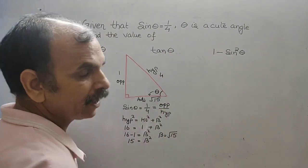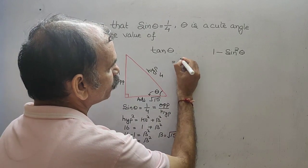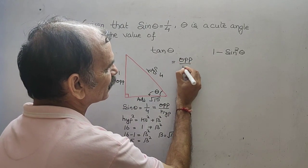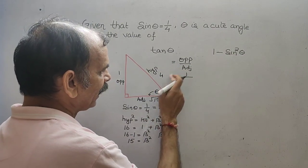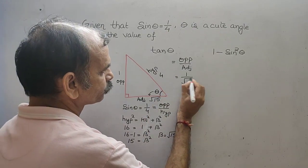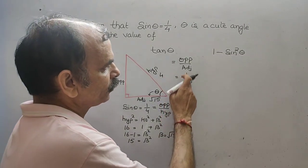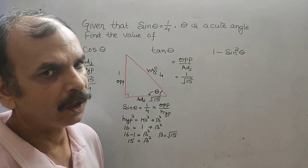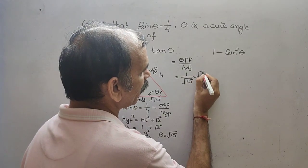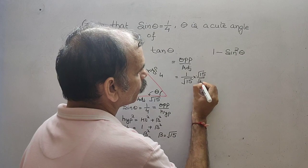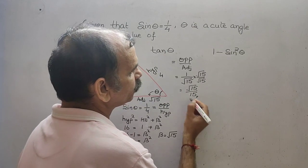Now comes tan theta. Tan theta is opposite by adjacent. Opposite is 1 and adjacent is root 15. So, tan theta is 1 by root 15. If you rationalize it, multiply by root 15 over root 15, it will come to root 15 by 15. So this is your value for tan theta.